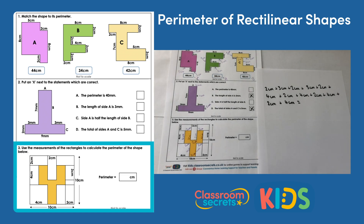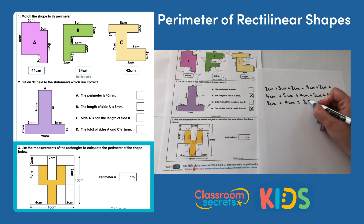We have each of the sides written down in our calculation and the final step is to add those values together — our answer is 34 centimetres. That was a video explaining the answers to the Perimeter of Rectilinear Shapes Worksheet from Classroom Secrets. For a video tutorial on the same step, go to kids.classroomsecrets.co.uk, and for more worksheets go to classroomsecrets.co.uk.